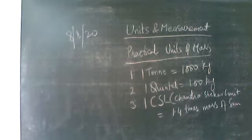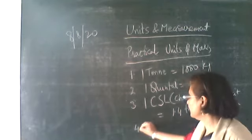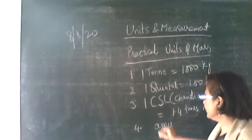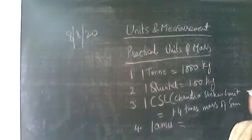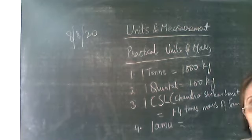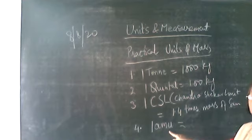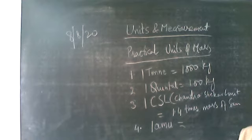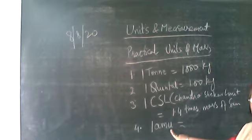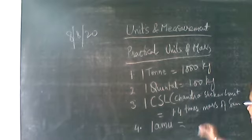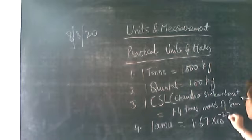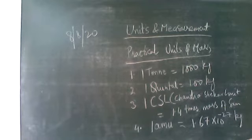Those are some of the big units used practically. One very small unit is the atomic mass unit, written as AMU or simply U. It is defined as the mass of one twelfth of carbon-12 (6C12). The mass of atoms and nuclei is measured in atomic mass units because kg would be a very large unit. One atomic mass unit is equal to 1.67 × 10⁻²⁷ kg.